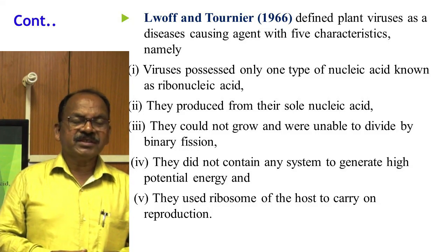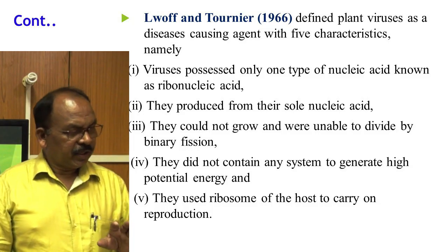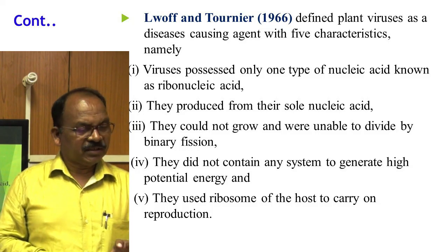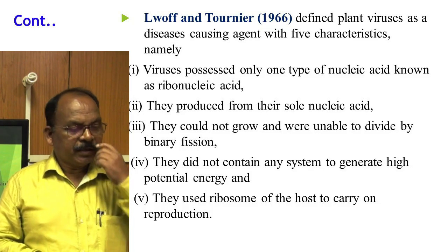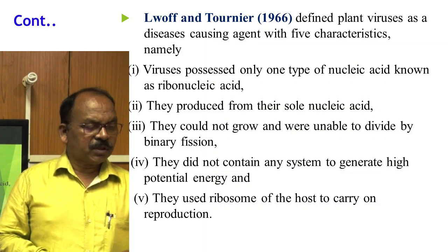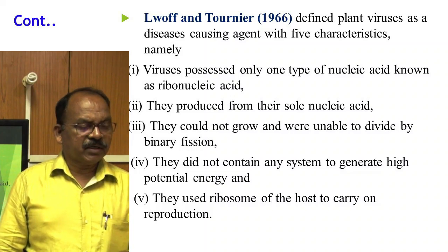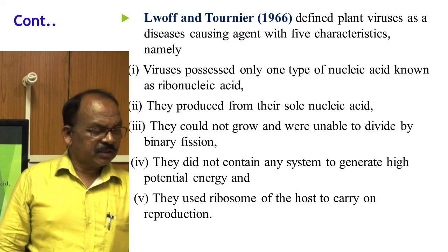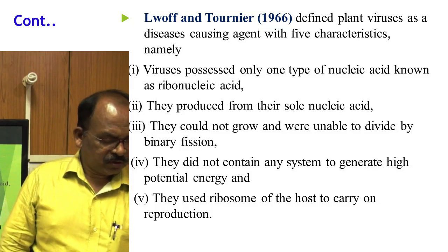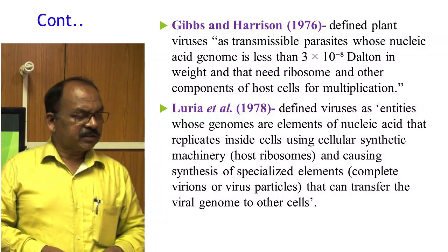According to Lough and Tornia in 1966, plant viruses were defined as disease-causing agents with five characteristics: viruses possess only one type of nucleic acid, known as ribonucleic acid or deoxyribonucleic acid; they are produced from their sole nucleic acid; they could not grow and were unable to divide by binary fission; they did not contain any system to generate high-potential energy; and they use the ribosomes of the host to carry on reproduction.